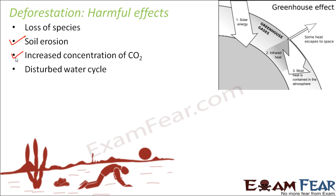Deforestation also disturbs the water cycle. Plants play a very important role in the carbon cycle, water cycle, and nitrogen cycle. When there are no plants — and deforestation will gradually lead us to a time when there will be no plants if we do not compensate — the water cycle is disrupted. We are just cutting down trees without planting new ones elsewhere, simply reducing the number of trees and destroying forest ecosystems.